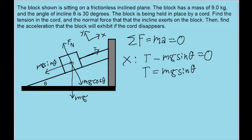The problem gives us m, the mass of the block, as 9 kilograms. And g is the acceleration due to gravity, 9.8 meters per second squared. So if we plug this into our calculator, then we find a tension force of about 44 newtons. So that is the answer to the part of the problem that asks about the tension.